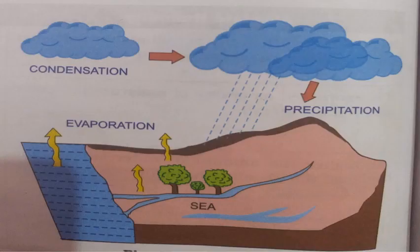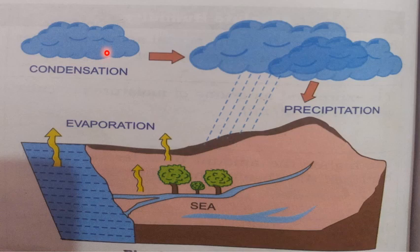Water always enters into or leaves the atmosphere. When water enters into the atmosphere because of high temperature, that process is known as evaporation. The process by which water vapor forms water droplets on cooling is known as condensation. The process by which water falls on the earth's surface in solid or liquid form is known as precipitation. The amount of water vapor present in the air is known as humidity, and this humidity defines the weather condition.